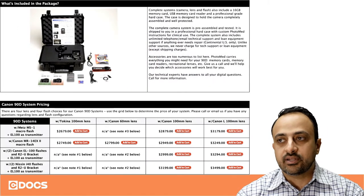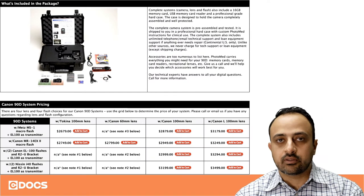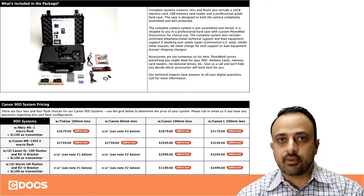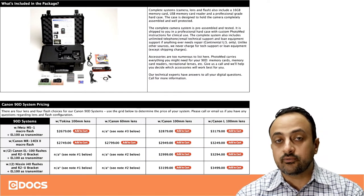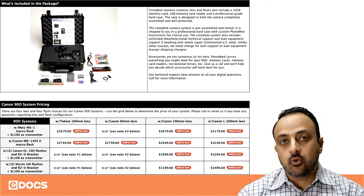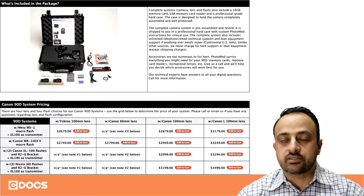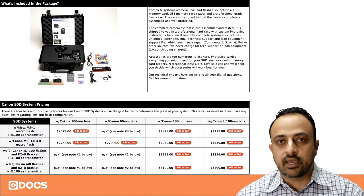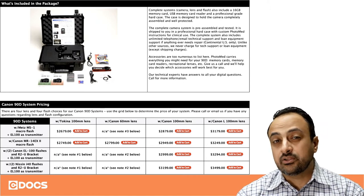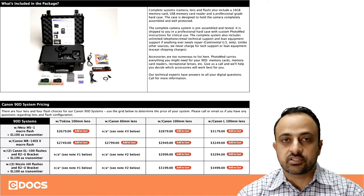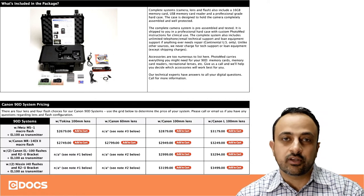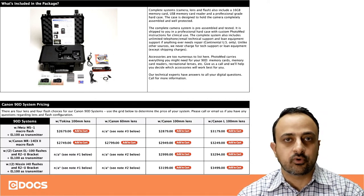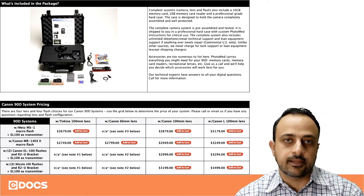Going back to that twin flash setup, in terms of cost — this is just a screenshot from Photomed — typically the cost on these cameras is going to be somewhere around $2,500 to $3,000 to buy a full setup with everything that you need.